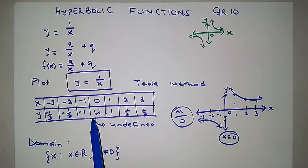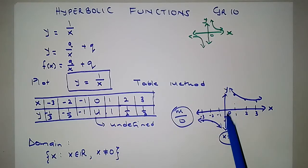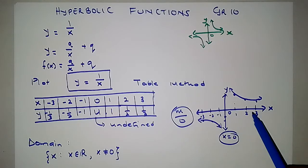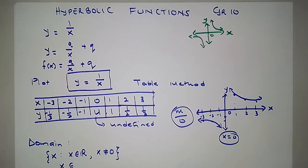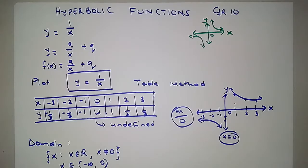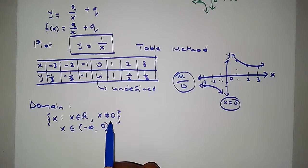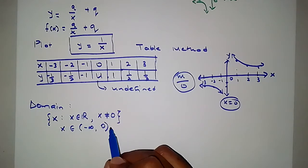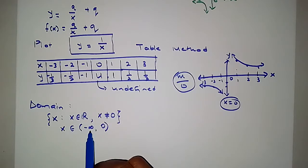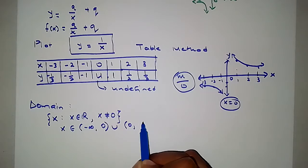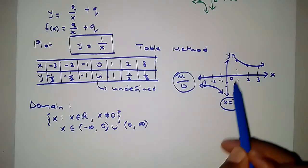From negative infinity going left, the function is defined. At x = 0 the function is not defined. Then it starts to be defined again going to positive infinity. We can also write the domain as: x is an element from negative infinity up to 0 — with an open bracket, meaning 0 is not included — union that with from 0 up to positive infinity.